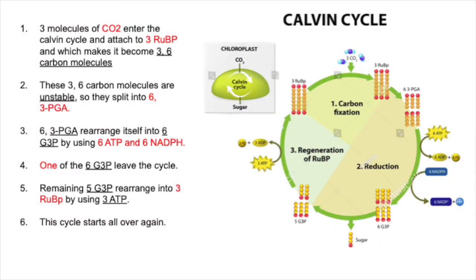After they split into 6 3-PGA, these 6 3-PGA will rearrange itself into 6 G3P by using 6 ATP and 6 NADPH. Each 3-PGA will use 1 ATP and 1 NADPH. Next, 1 of the 6 G3P will leave the cycle, which makes the remaining 5 G3P rearrange itself into 3 RuBP by using 3 ATP. So this cycle will start over again.